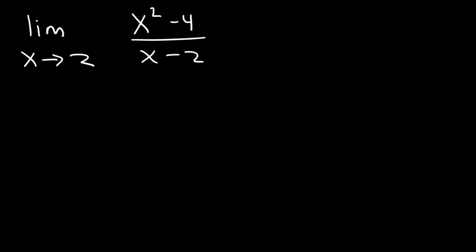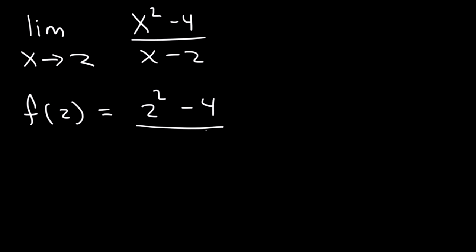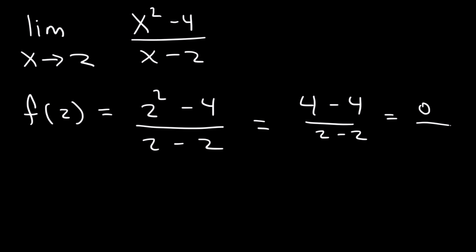Now this is different than plugging in 2. If you want to find the value of the function when x is 2, you would substitute. This would be 2 squared minus 4 divided by 2 minus 2. 2 squared is 4, and 4 minus 4 is 0. 2 minus 2 is 0. So we get 0 over 0.